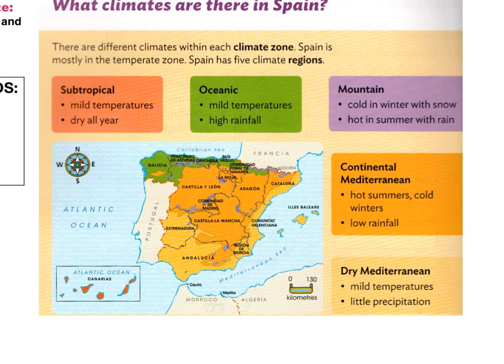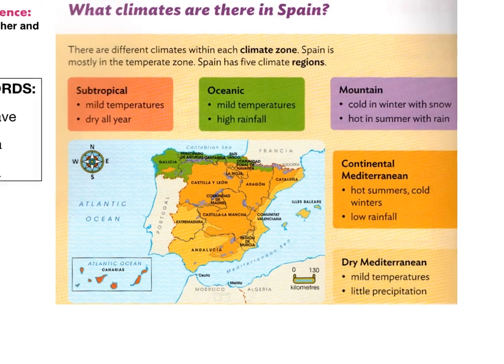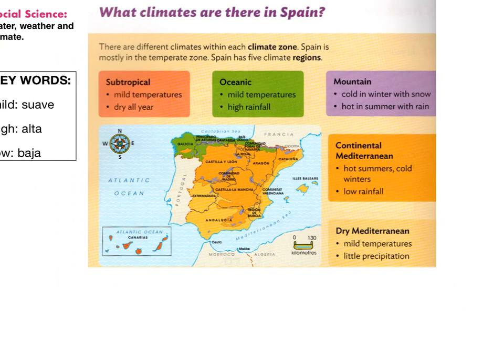Now let's see the last part. Most of the peninsula is colored in orange and yellow. This is the most abundant climate in Spain: the Mediterranean. The Mediterranean climate is divided into two types. The most predominant is the continental Mediterranean. Its main characteristic is that summers are hot and winters are cold, and the rainfall is very low.